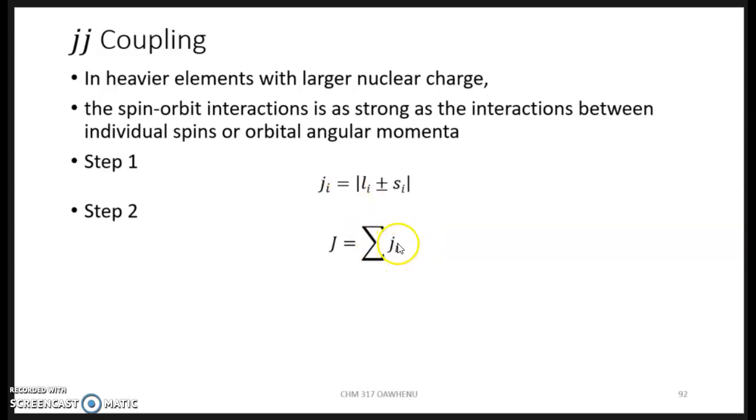J_i is just for one electron. If you look at this, in this case J_i is L_i, that's for the ith electron, plus or minus S_i. So it is not equal to L plus S, L plus S minus 1, capital L plus S minus 1, and so on. This means the small j can take just two values.